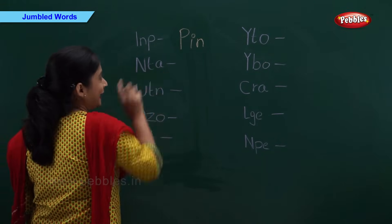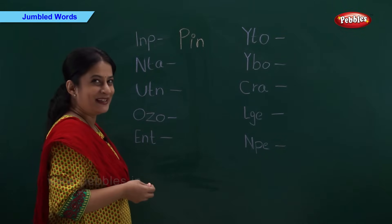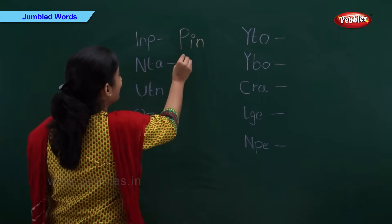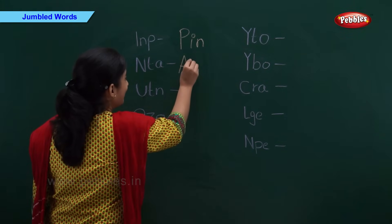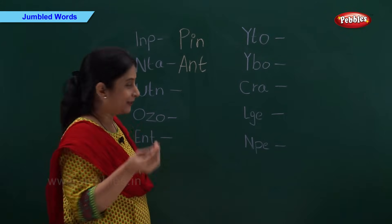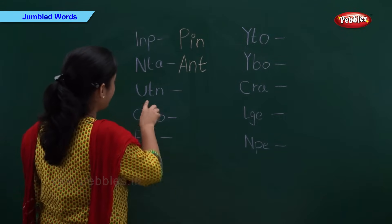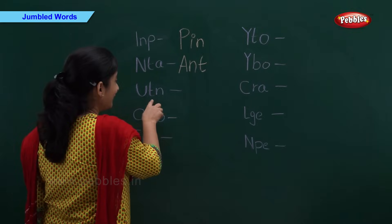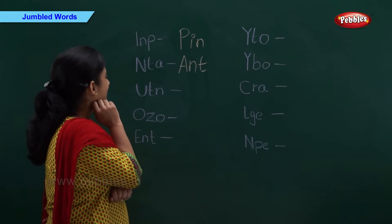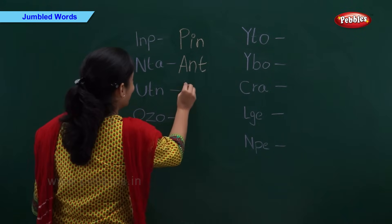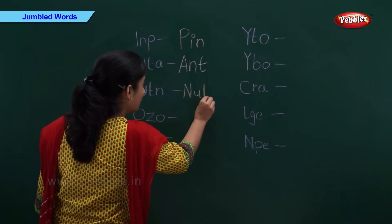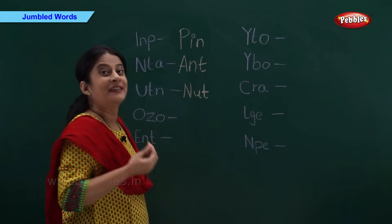N-T-A. Can anyone tell me? Think fast. Correct. A-N-T. Ant. And now we have U-T-N. U-T-N will be? N-U-T. I got it. N-U-T. Nut.